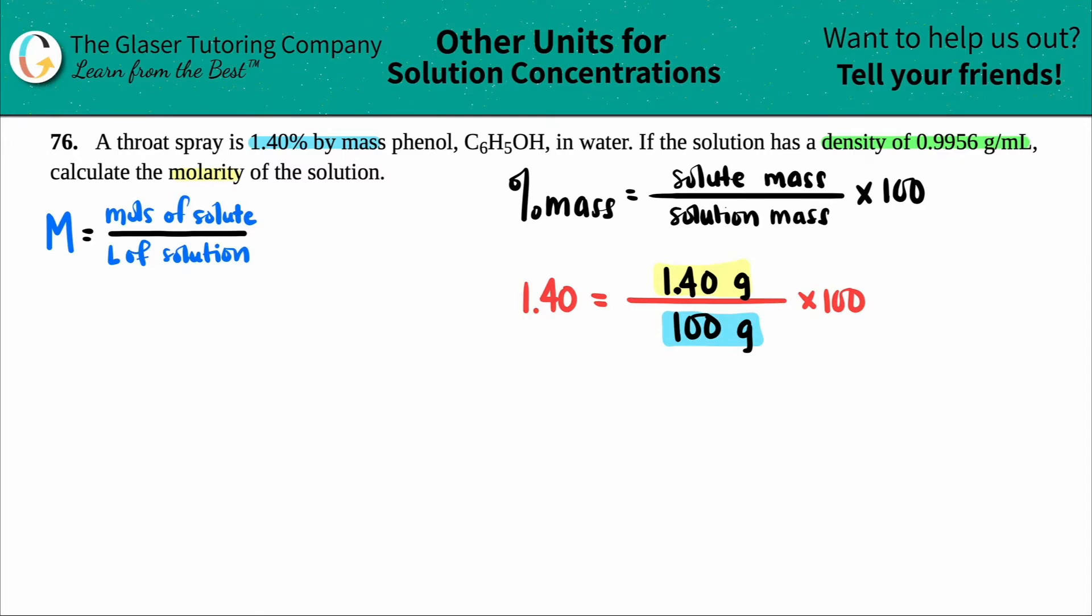For my solute, I now know that I have 1.40 grams, and the solute is phenol, C6H5OH. If I need to find the molarity, what do I have to convert this into? Not grams, but moles. I got to go to moles of C6H5OH.